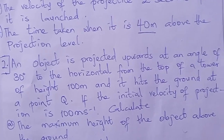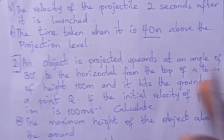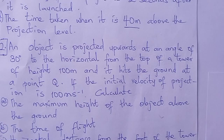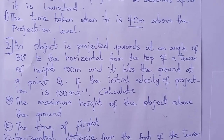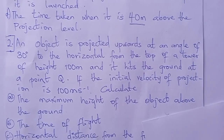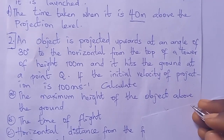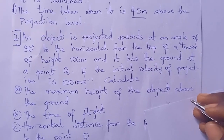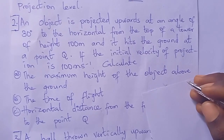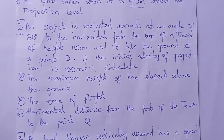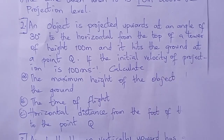An object is projected upwards at an angle of 30 degrees to the horizontal from the top of a tower of height 100 meters and hits the ground at point Q. With initial velocity of projection being 100 meters per second, calculate the maximum height of the object above the ground, the time of flight, and the horizontal distance from the foot of the tower to point Q.